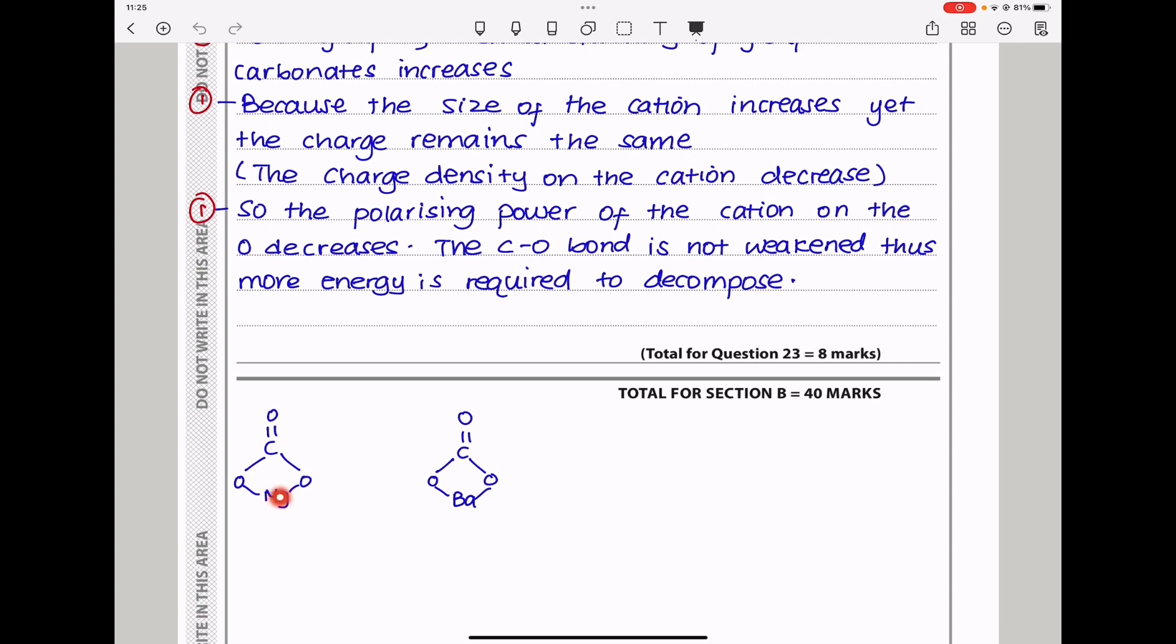This one has greater polarizing power, and this one has lower polarizing power. So this is going to distort the electron cloud on this oxygen, weakening this bond, and therefore less energy will be required to break that bond. But in barium, we see that the size of the cation is bigger, and the charge is still the same as magnesium. So that means the ability of barium to distort the electron cloud on oxygen is going to be lower, and that means this bond is not going to be weakened as much.